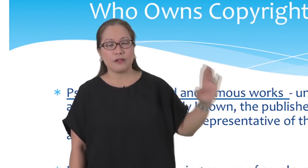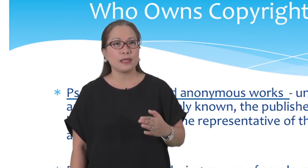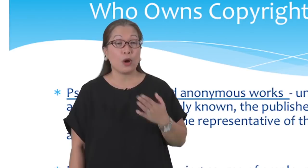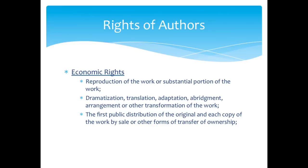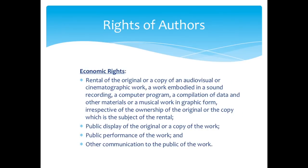So we know what is covered by copyright and how to determine who the owner is. What are the rights of the authors or creators? There are two general categories: economic rights and moral rights. Economic rights is the right to reproduce the work or any portion of it, to dramatize it, translate it, adapt it, make abridgments or different arrangements, or transform the work. Economic rights also covers the first public distribution of the original and each copy of the work by sale or other forms of transfer of ownership. He also has the right to rent it out and to publicly display the original or a copy of the work.